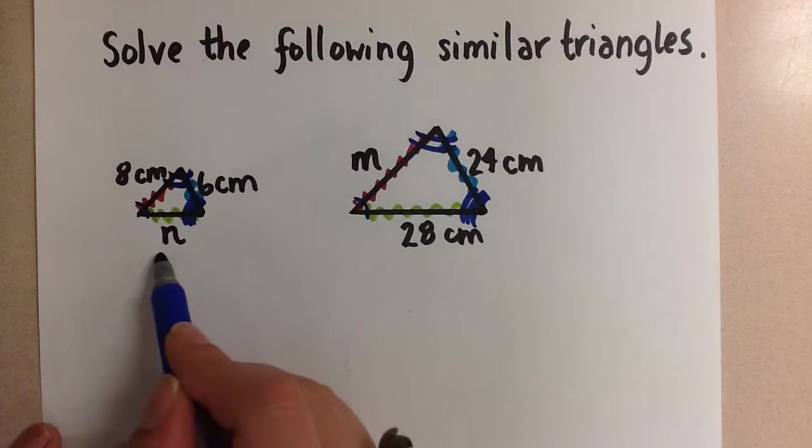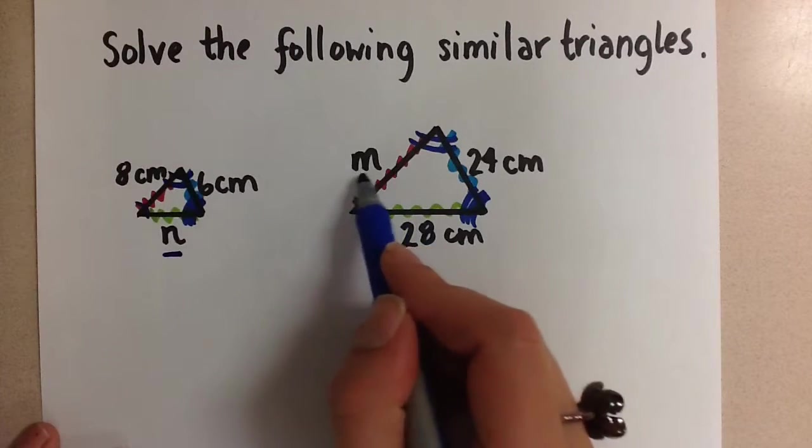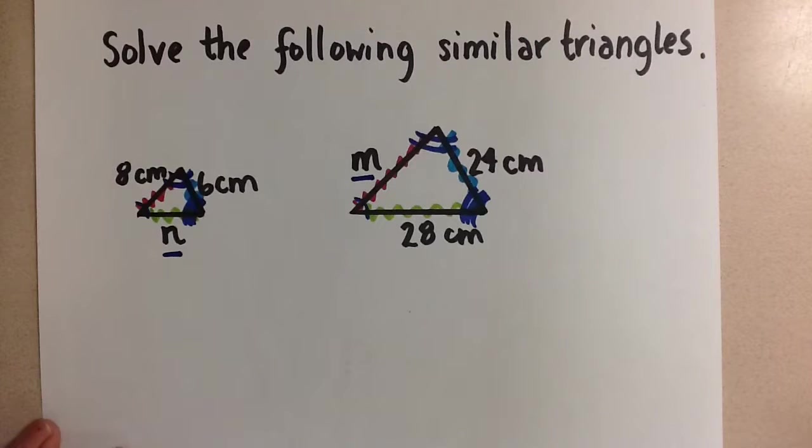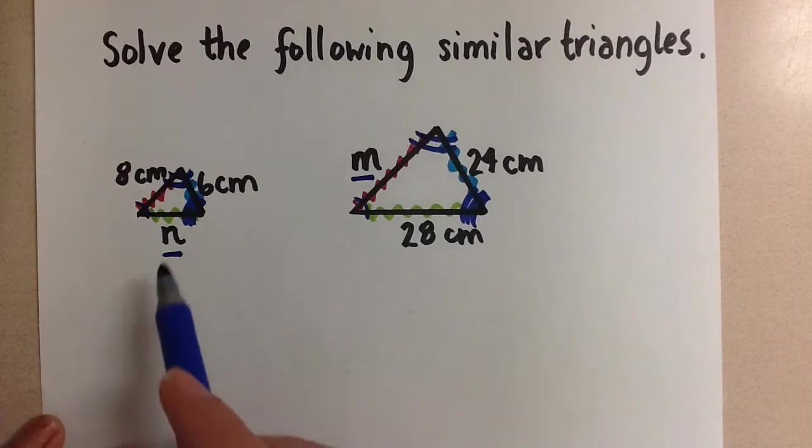So you notice that we have a variable here, n, and a variable here, m. So we have to set up two different proportions to solve for each one of these variables. Let's solve for the n value here first.